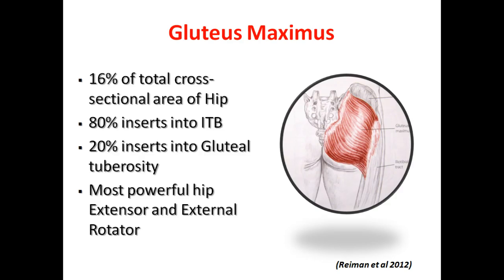A brief look at the anatomy. The gluteus maximus is one of the largest muscles of the posterior chain. About 80% of the muscle is inserted into the ITB and about 20% into the gluteal tuberosity. It's the most powerful hip extensor and external rotator.